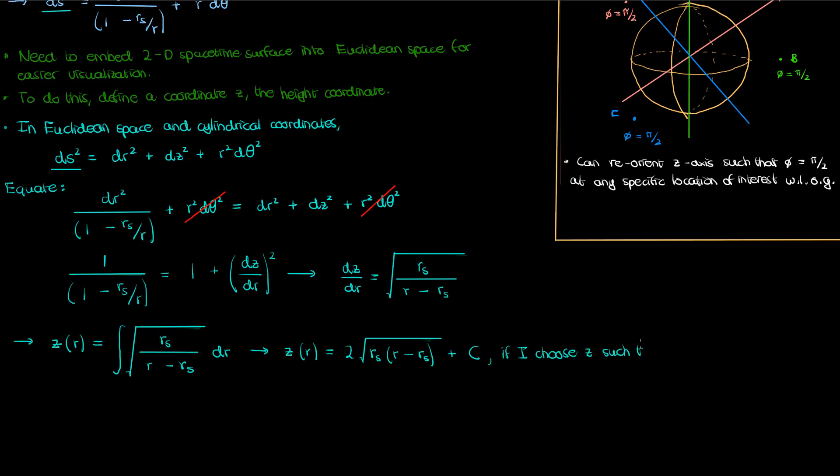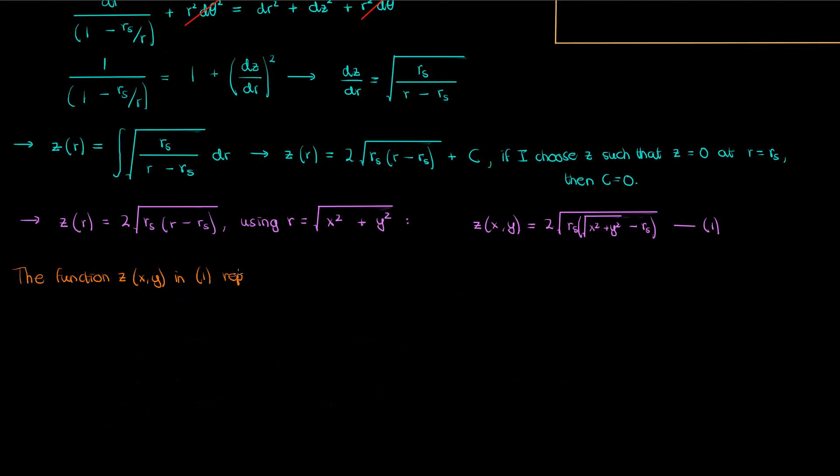If I arbitrarily select my height coordinate z such that the value of z is 0 at my Schwarzschild radius r_s, then my integration constant will be 0 so my z of r becomes the following. Now since r is my radial coordinate I can convert it to the x and y Cartesian coordinates by using r as the square root of x squared plus y squared. This will help me come up with an equation for my surface as a function of my Cartesian coordinates x and y. Now this equation, which I'll call equation 1, is the equation for a surface called Flamm's paraboloid. I've drawn it here for your reference.